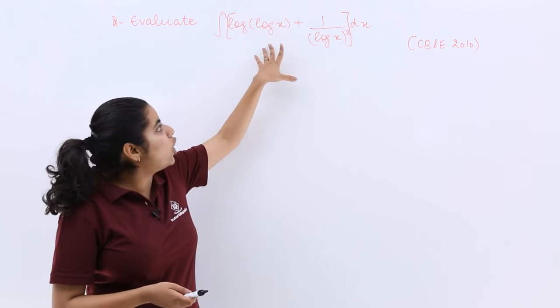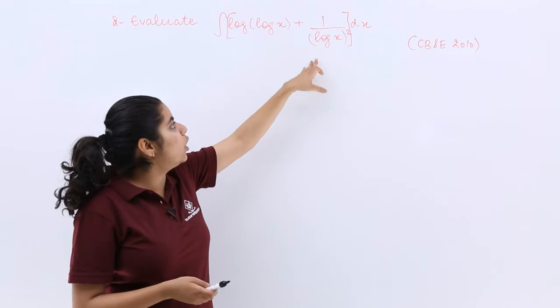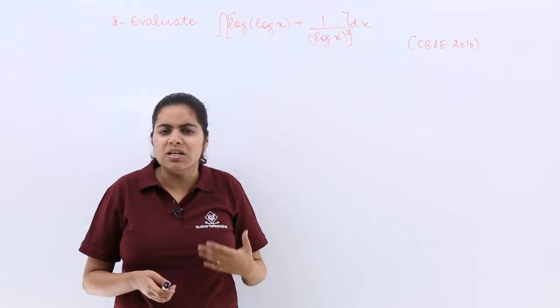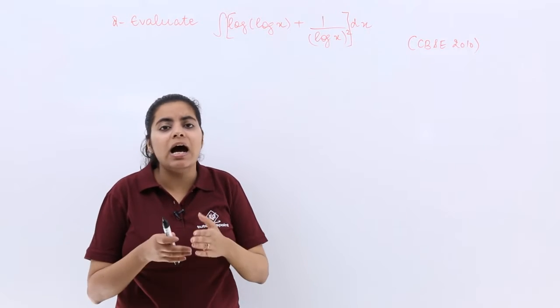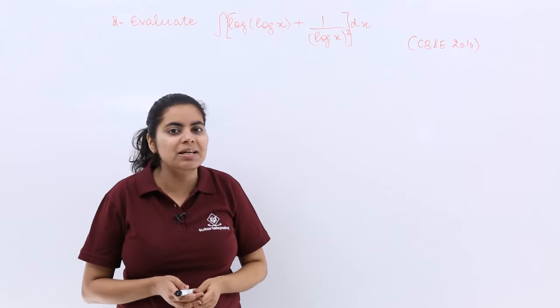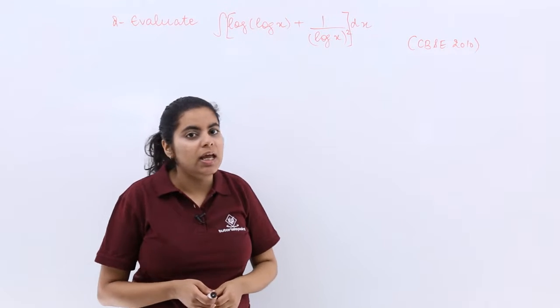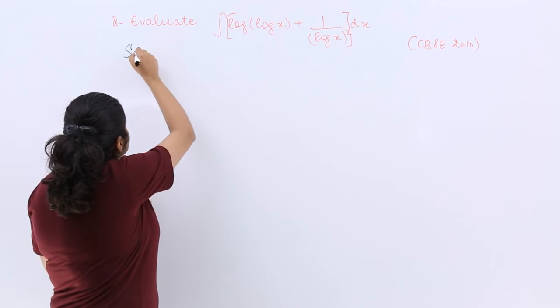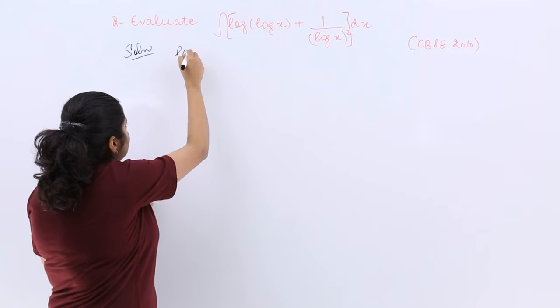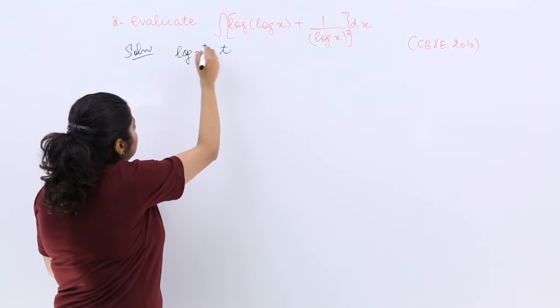But this time we have log(log x) and that too (log x) whole square in the denominator. So it is becoming a bit difficult. I should be adopting an easier method for it. Let me try with substitution. If I write the solution as let log x is equal to t,